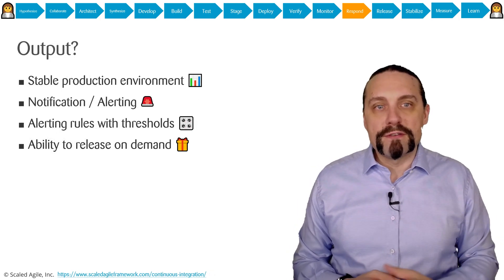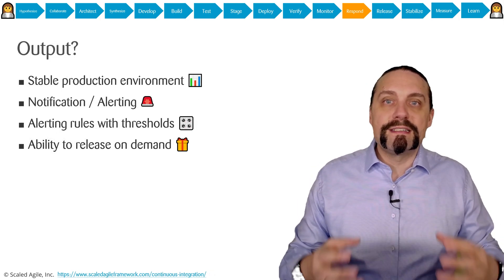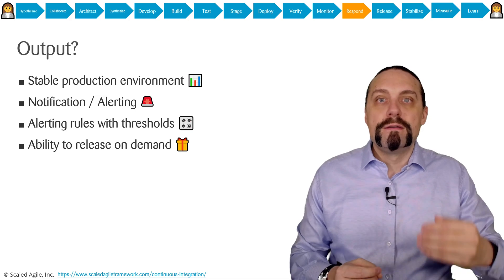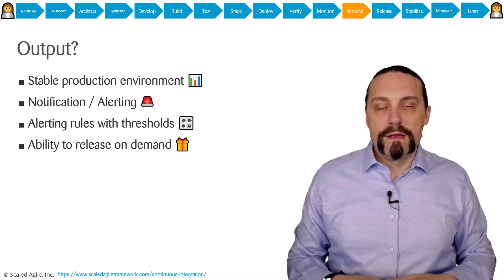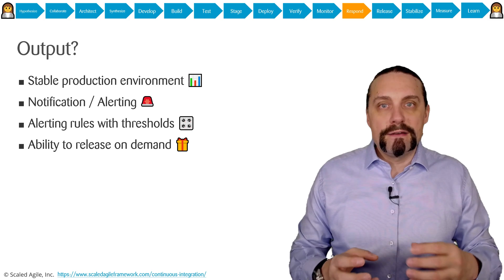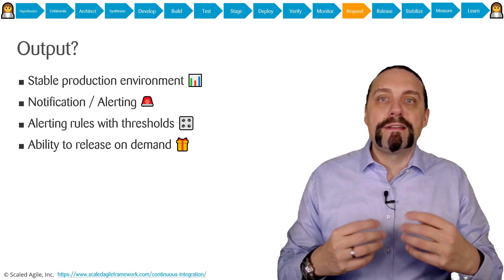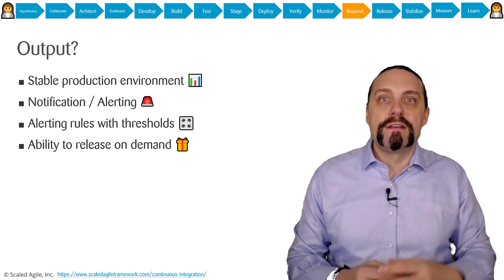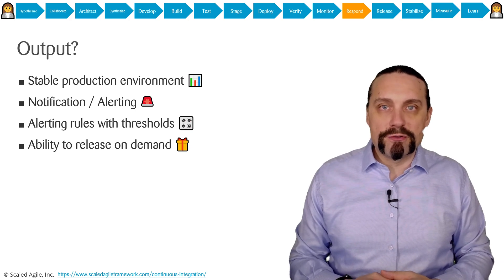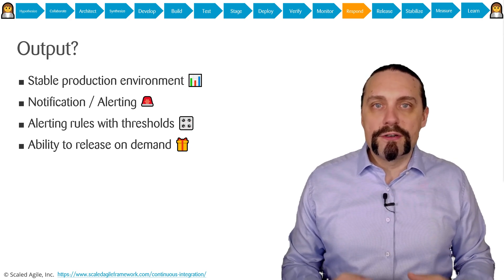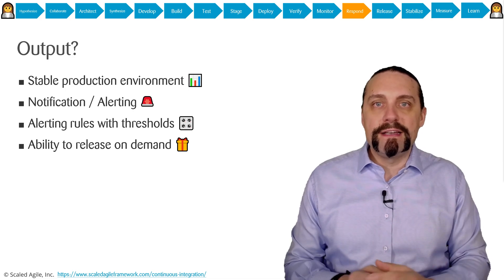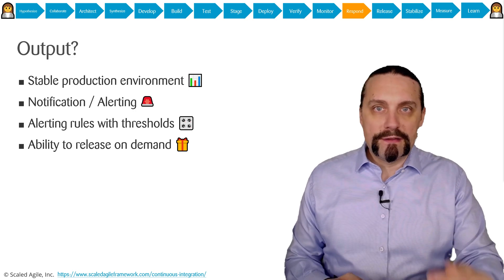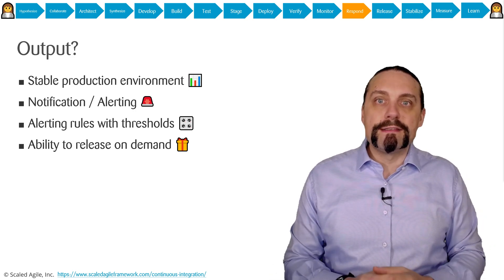The output of the response step is, of course, a stable production environment so that we can ensure business continuity. Together with monitoring, we now also have a notification and alerting system that alerts us for dangerous conditions in production. These alerts are based on carefully evaluated thresholds, and with that we give the business the possibility to release on demand.